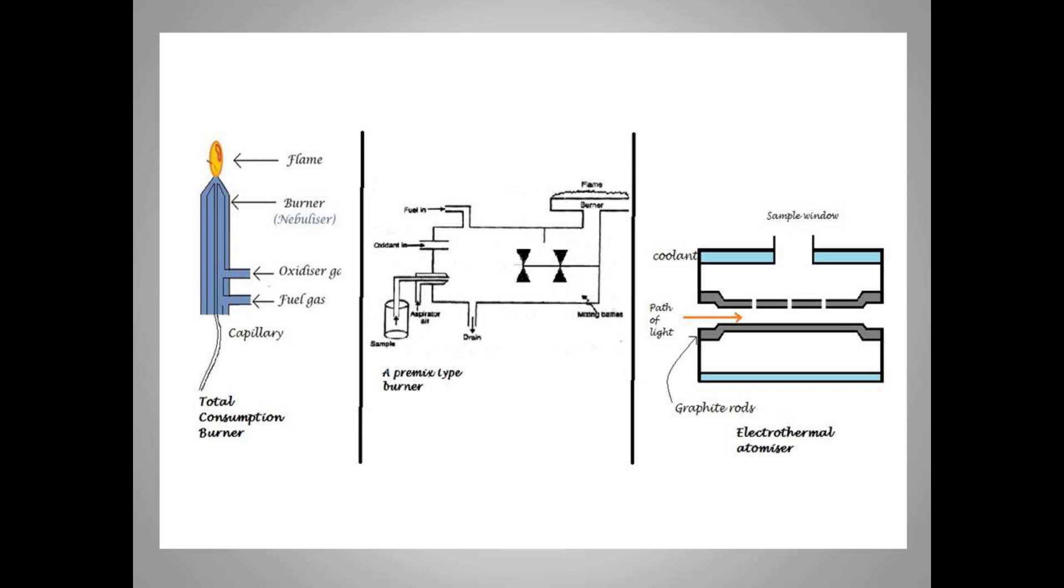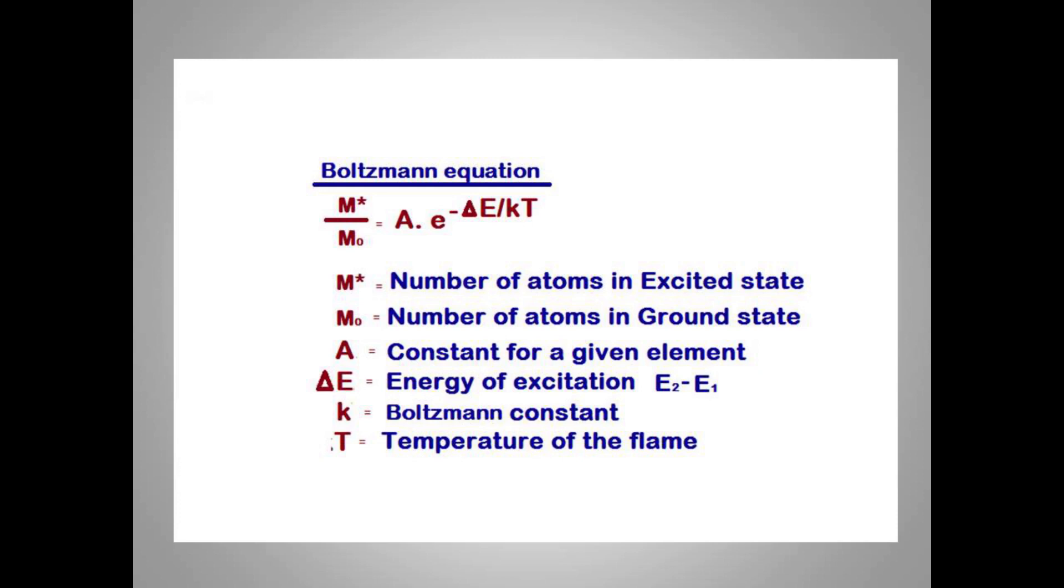Coming back to the earlier burners, they are having the combination of oxidizer gas and fuel gas because the atomization requires a very high temperature, approximately 3000 degrees Celsius. The combination of fuel along with oxidizer gas can produce a high temperature flame. Flame photometry has one limitation: it is a temperature dependent technique. In emission spectroscopy, the atom in excited state is responsible for the emission. As you can see in the Boltzmann equation here, the ratio of metal in excited state to the ground state is dependent on the temperature of the flame. Higher the temperature, more is the number of atoms in the excited state.